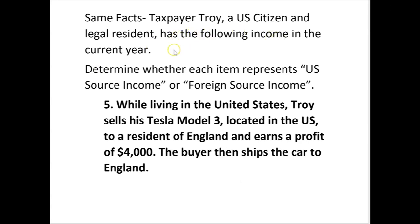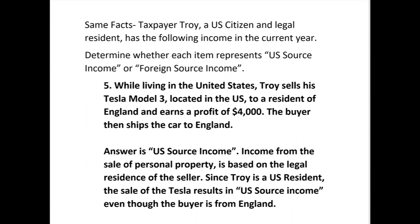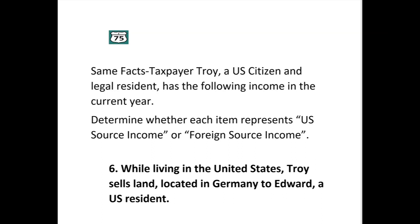Number five: now Troy is living in the United States. He sells his Tesla Model 3, located in the US, to a resident of England, earning a profit of $4,000. The buyer ships the car to England. This is US source income because it's income from the sale of personal property, which is based on the legal residence of the seller. Since Troy is a US resident, the sale results in US source income — even though the buyer is from England and will take the car there.